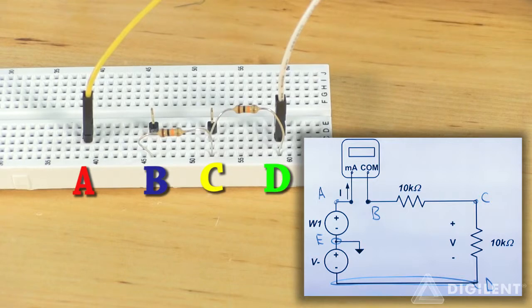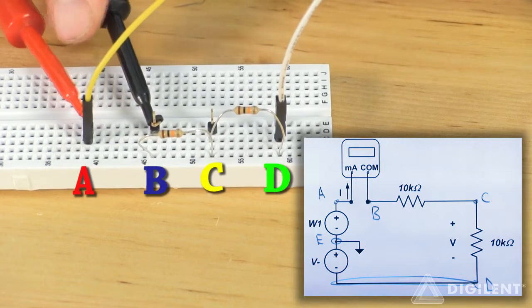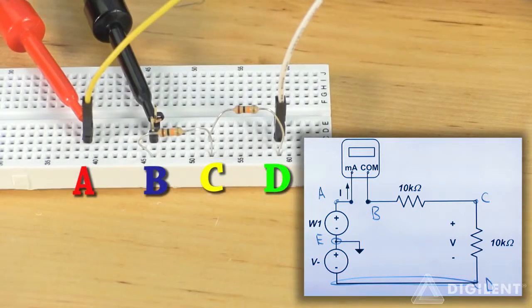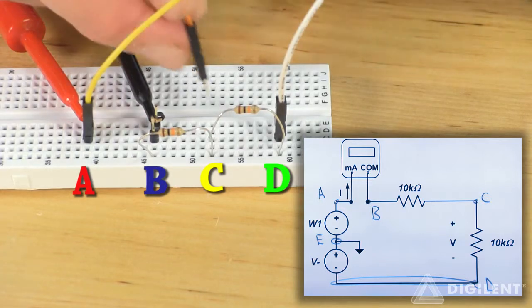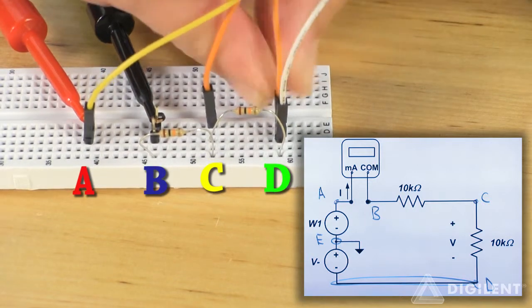Finally I'll connect my measurements. The ammeter goes between nodes A and B. I'll use channel 1 of the analog discovery's voltmeter to measure the voltage V, so I'll connect the 1 plus terminal, the orange wire, to node C, and the 1 minus terminal, the orange wire with the white stripe, to node D.